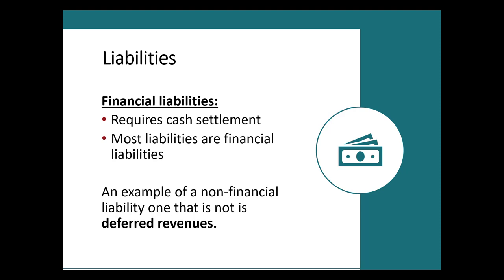For example, if we go pick up some supplies and say 'put that on account,' they're going to record the sale: debit accounts receivable, credit revenue. You're going to debit your supplies, credit your accounts payable. Then when you settle up within the terms stated, you debit your accounts payable and credit cash. So that's a financial liability.